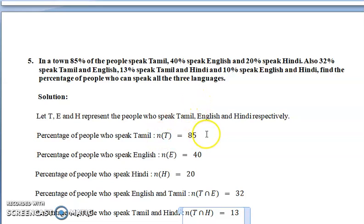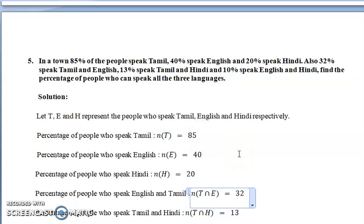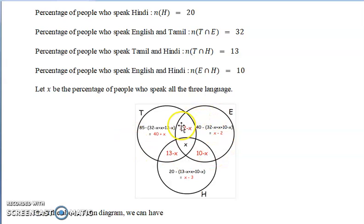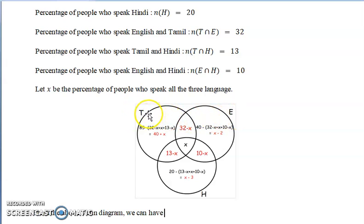Like the previous problem, let T, E, H represent Tamil, English, and Hindi respectively. Write all given data: n(T), n(E), n(H), and all pairwise intersections. Here we are going to use only a Venn diagram. The first set is Tamil (85), second is English (40), third is Hindi (20). Since the number of people speaking all three is unknown, we take it as x. Tamil and English together is 32, so that pairwise exclusive region is 32−x; similarly 10−x and 13−x for the other pairs.